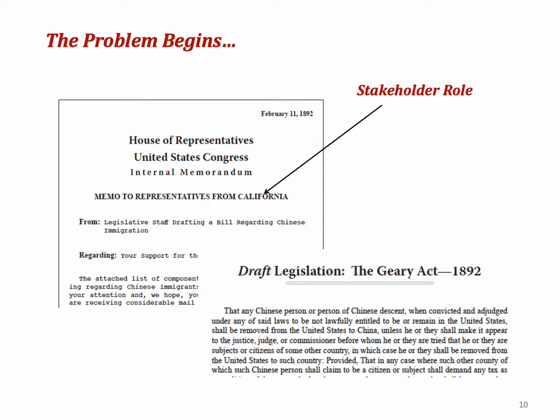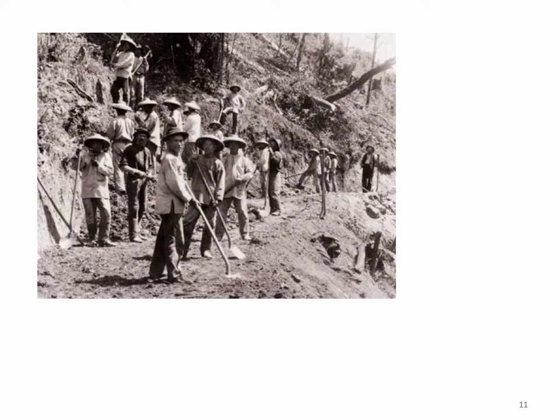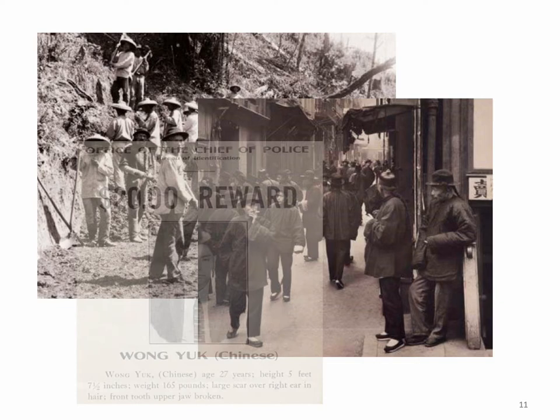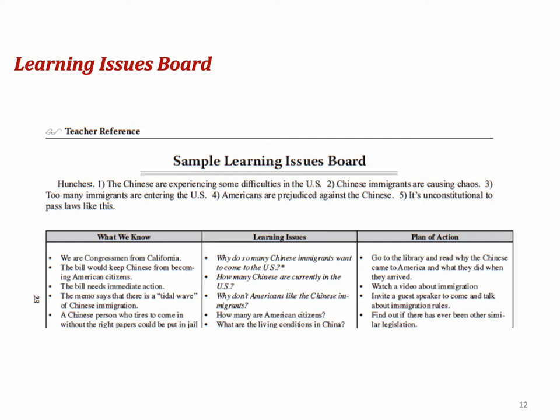The memo refers to a tidal wave of immigration causing economic and social chaos, and hints that California voters are not happy with the situation—a fact that should engage the curiosity of the newly appointed elected officials. Students read the memo and the draft legislation. They're usually quite surprised to find a law on the books that prohibits the Chinese from immigrating to America and have lots of questions about what's happened to bring the situation to pass. Students complete the Learning Issues Board, listing the information they know and questions they need to answer in order to understand the problem better. They then prioritize their questions, selecting the top four or five they need to answer first, and create a plan of action to find answers for those top priority questions.